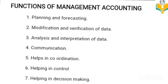Second one: modification and verification of data. Management accounting modifies the accounting data by arranging them in such a way that it becomes useful for management. Third one: analysis and interpretation of data. After verifying the accuracy of data, the management accountant analyzes and interprets accounting data in a simple way, then presents these data with comments and suggestions before the management.